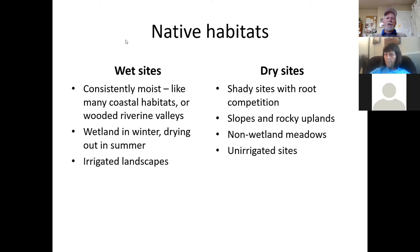Dry locations are typically unirrigated during the growing season. Native plants adapted to dry sites often resent summer watering — they do not like to be watered in the summer, even a little. Dry sites can be a sloped sunny location, an open meadow in the mountains, or non-wetland meadows. They can also be shady sites where there's a lot of root competition, where the tree canopy blocks rainfall and tree roots absorb most of the moisture, leaving very little available for smaller plants.